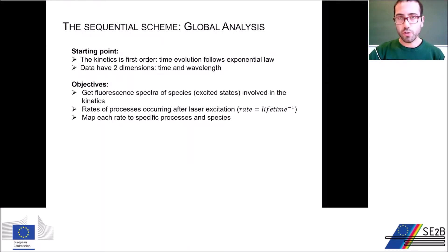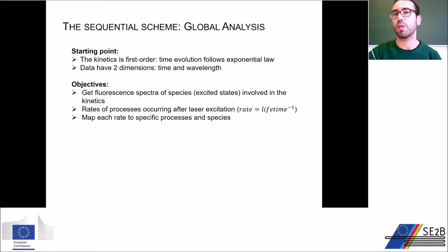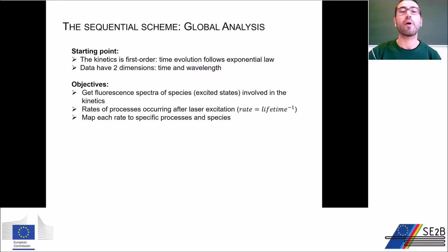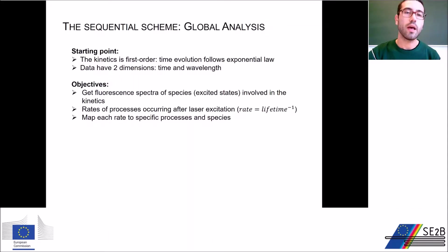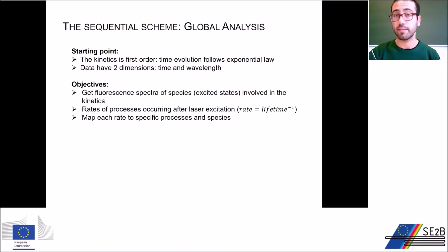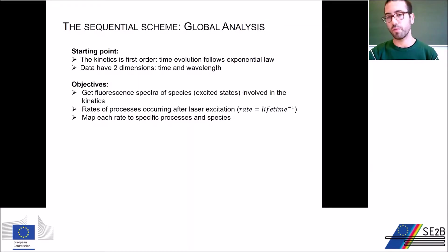What we know so far is that the kinetics are first order, so the time evolution is described by exponentials. We also know that data have two dimensions to exploit: time and wavelength. Our goals for this analysis are: first, to understand how many species and how many different excited states participate in the dynamics, and to get their fluorescence spectra. We also want to know the rates for the excited state processes and to assign each rate to each specific process and to the species involved.